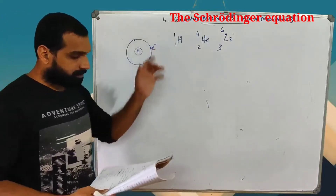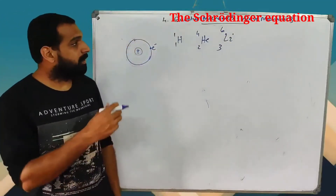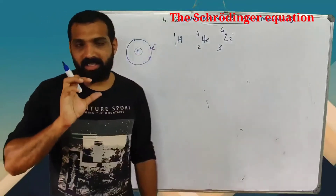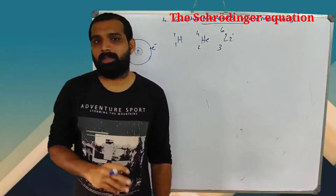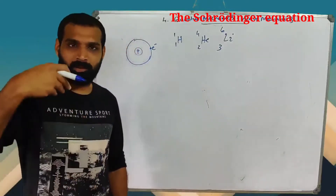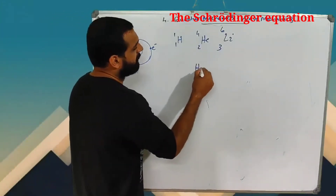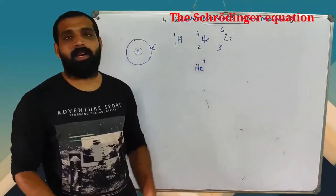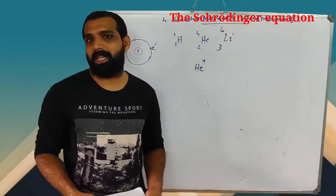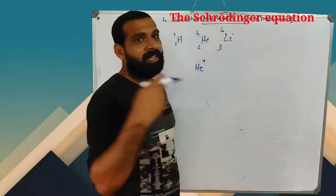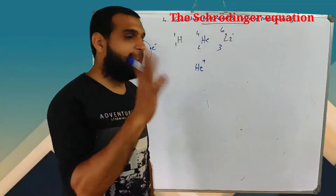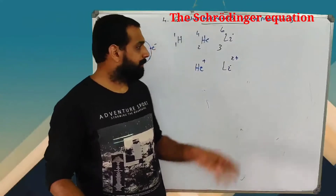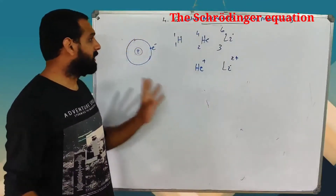Helium-like atoms are one-electron atoms. If you remove or donate one electron from helium, it becomes He⁺. The Bohr model will work with these atoms — helium with one electron remaining. For lithium with 3 electrons, remove 2 electrons to get Li²⁺, and then it will work with these atoms.